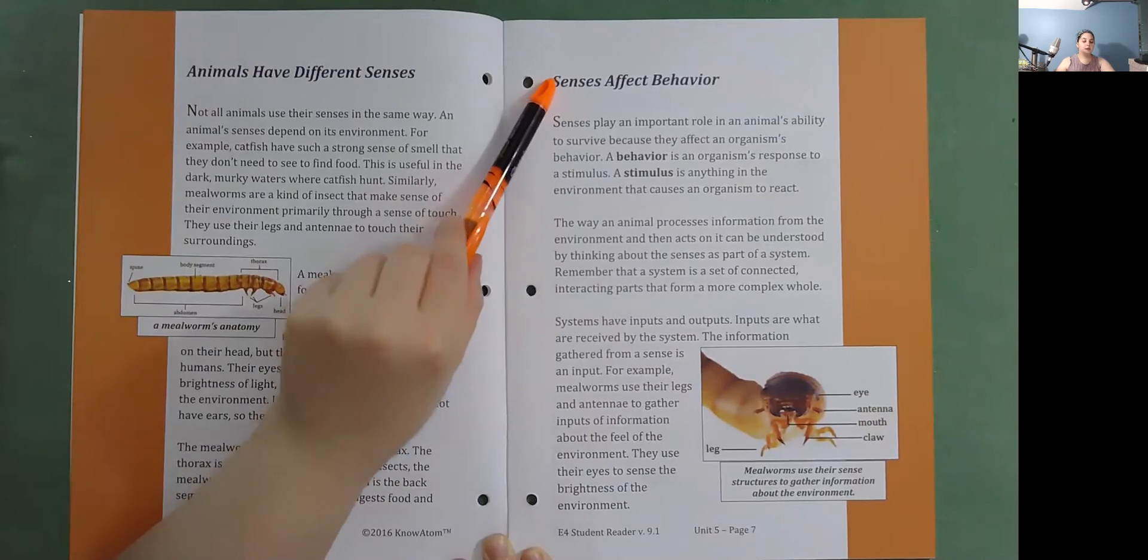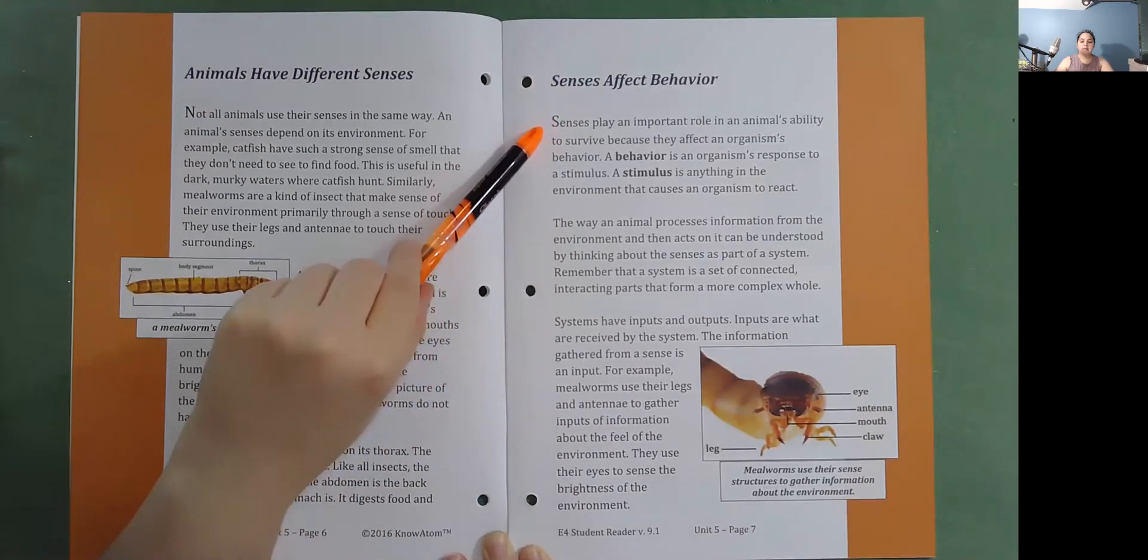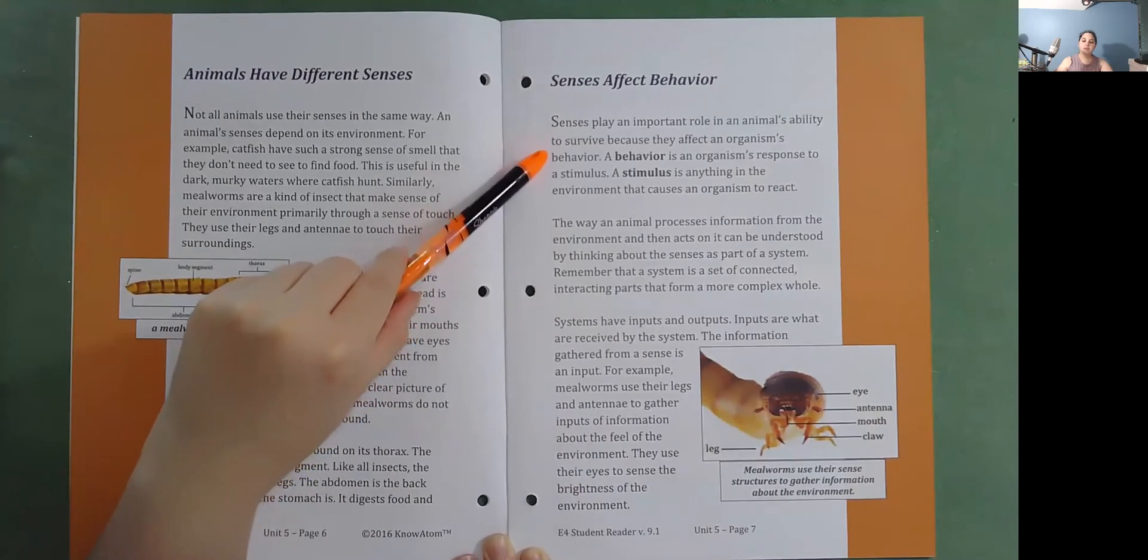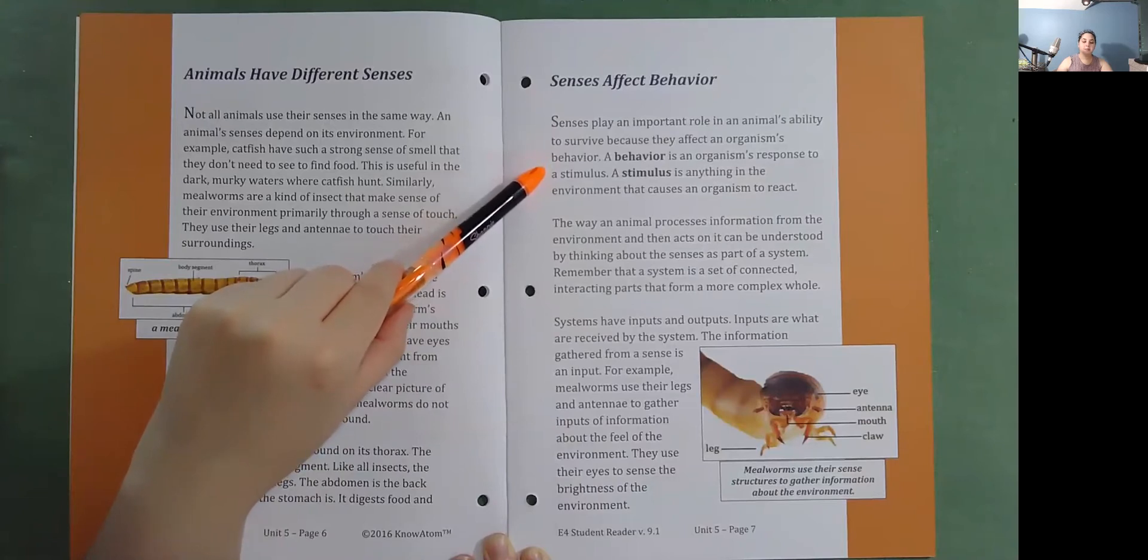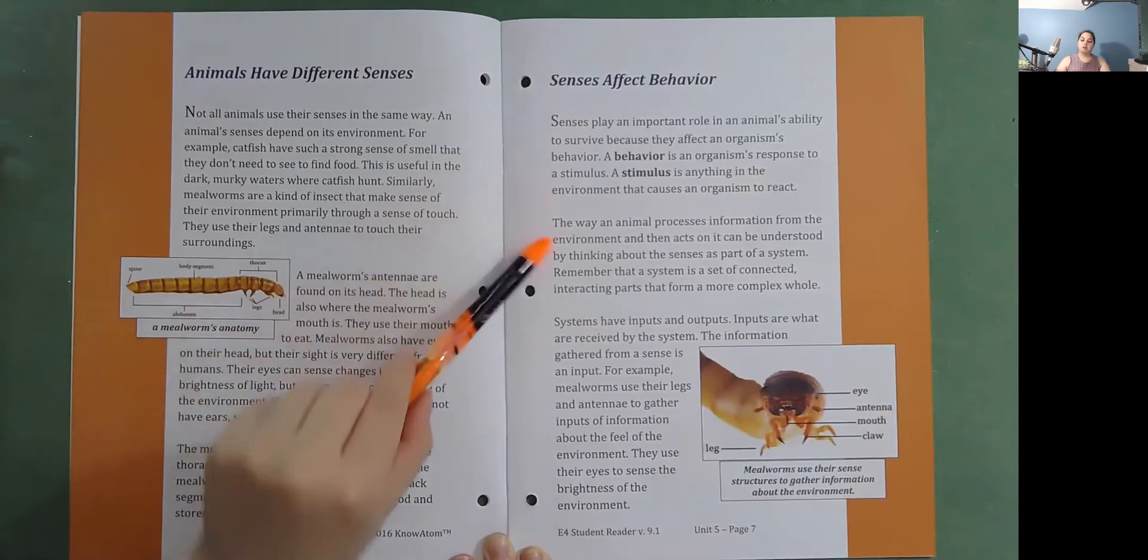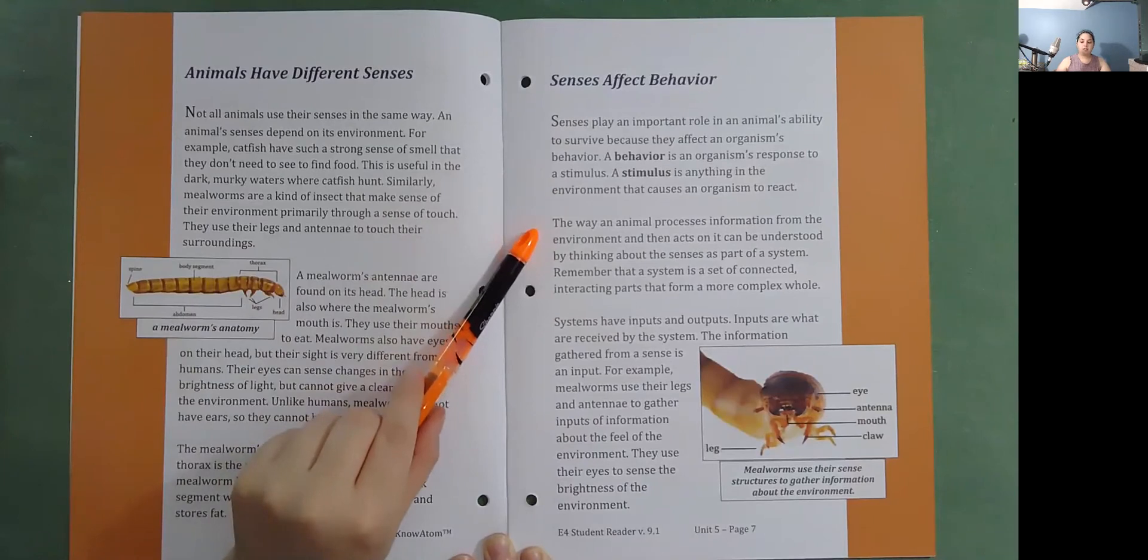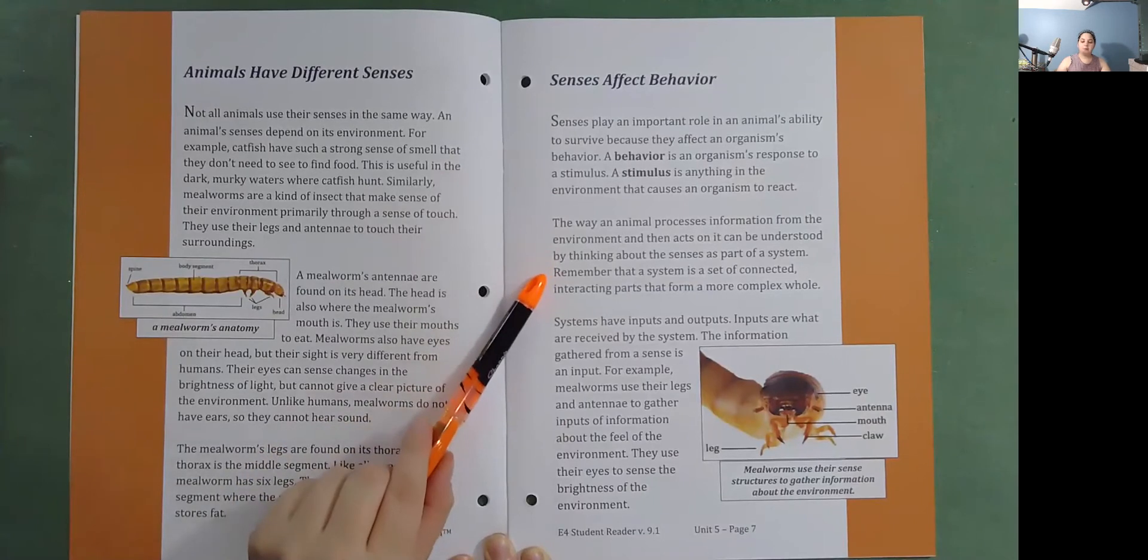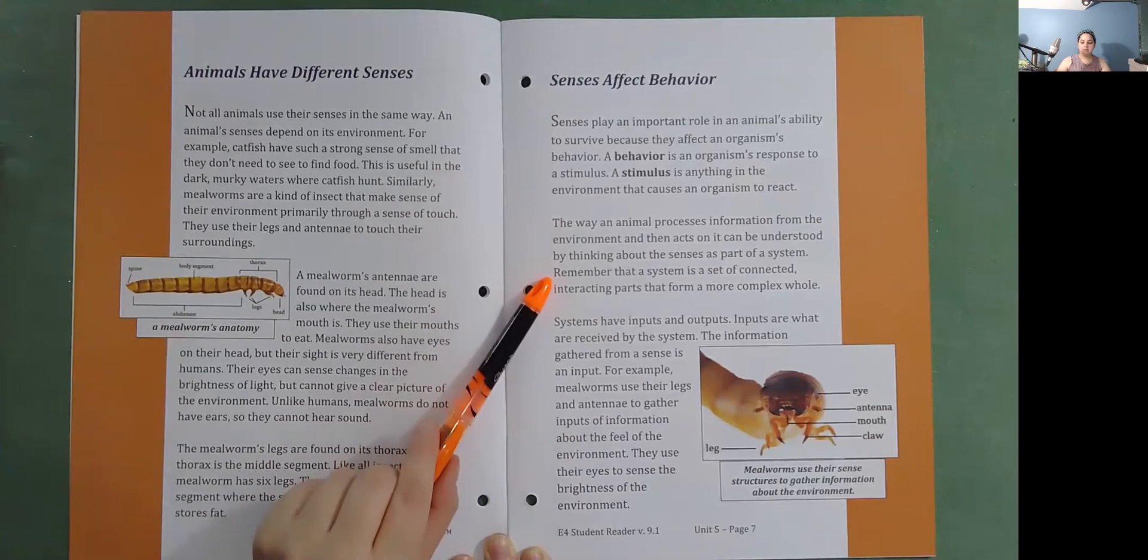Senses affect behavior. Senses play an important role in an animal's ability to survive because they affect an organism's behavior. A behavior is an organism's response to a stimulus. A stimulus is anything in the environment that causes an organism to react. The way an animal processes information from the environment and then acts on it can be understood by thinking about the senses as part of a system.